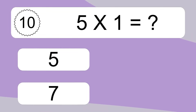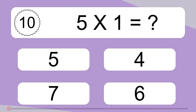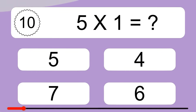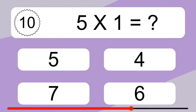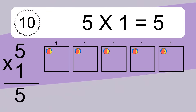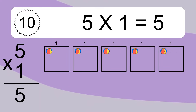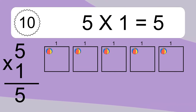5 times 1 equals what? 5 times 1 equals 5. We have 5 boxes and each box has 1 colorful ball inside. If you count all the balls in all the boxes together, you will have 5 times 1 balls. This equals 5 balls.